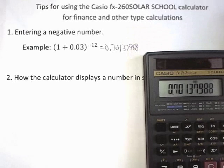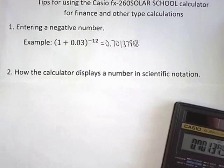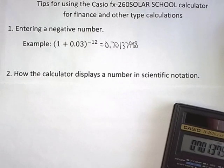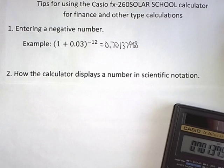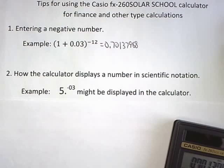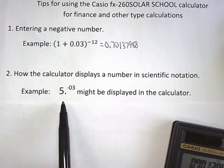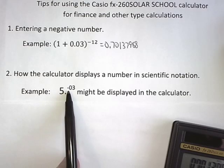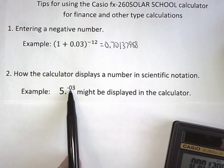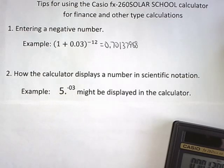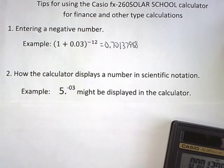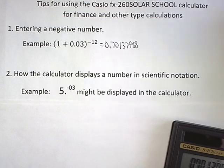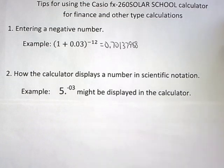Number two, you need to be able to deal with how the calculator displays a number in scientific notation. And an example of that is you might see something like this. Five point and then you've got in the exponent negative oh three. You might see that. What does it mean?